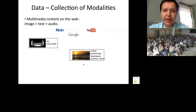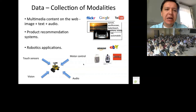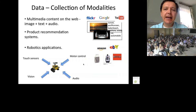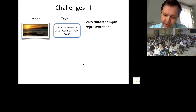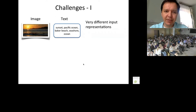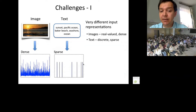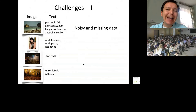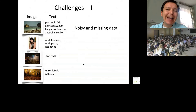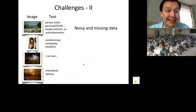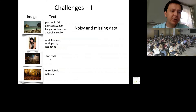Let me show an instance of this model applied to multi-modal data. Today's data is a combination of different sources: images are typically associated with text, and robotics applications have multiple sensors. We started looking at images and text — a standard application in the machine learning community. Images and text have very different input representations: images are dense, text is sparse and discrete, making it difficult to learn cross-modal features from low-level inputs. Data is also typically noisy with lots of missing labels.